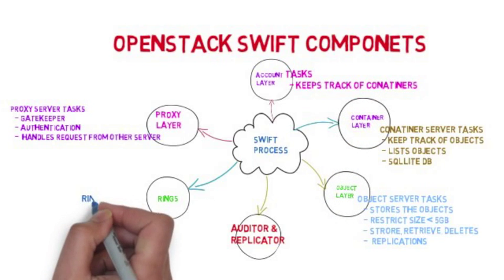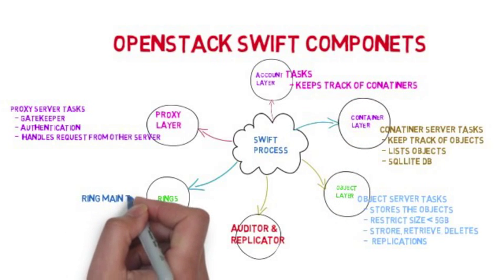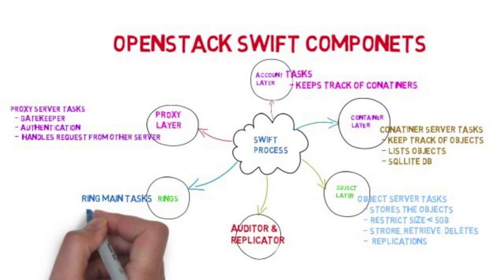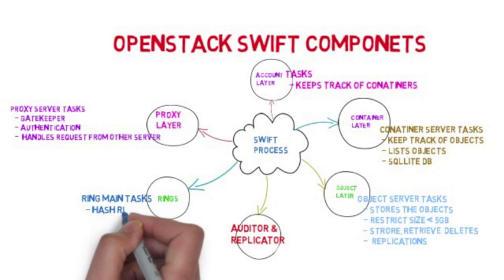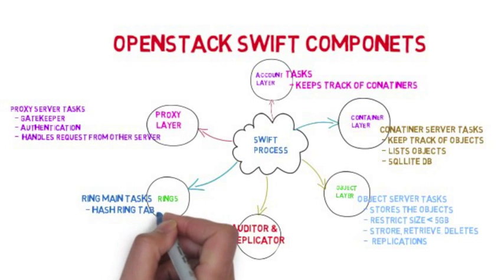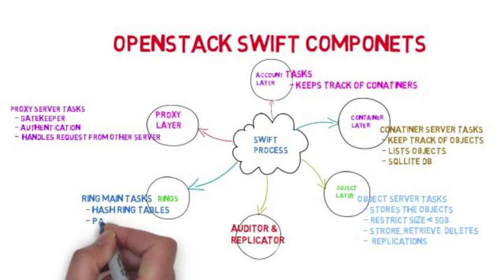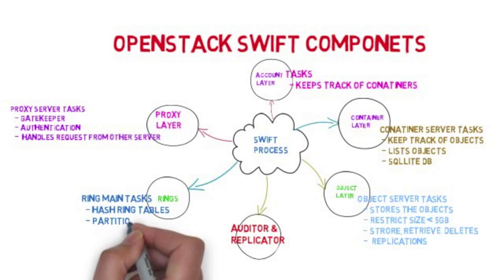The ring hash function determines where to store the objects, and uses concepts like partitions and replications.